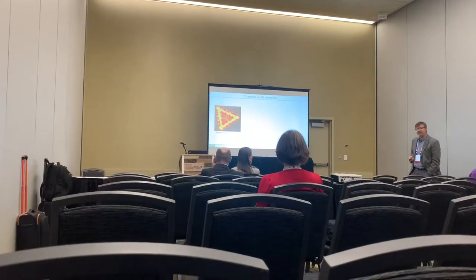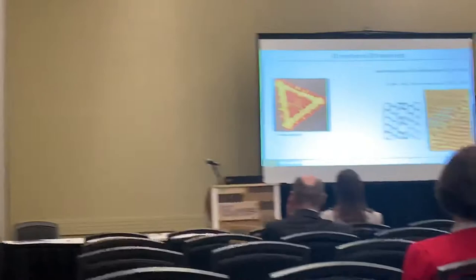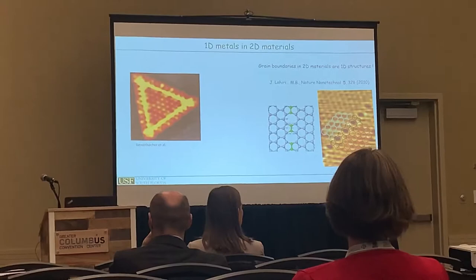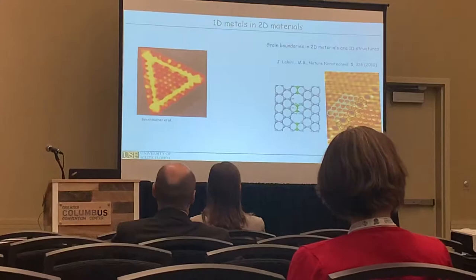Defects in transition metal dichalcogenides or other 2D materials — an example is early work on graphene — can have grain boundaries, and they also have very distinguished electronic properties. The problem with graphene is that we really cannot produce a high density of these grain boundaries, but in transition metal dichalcogenides we can.